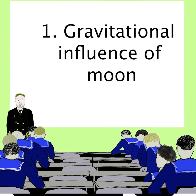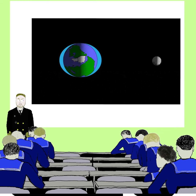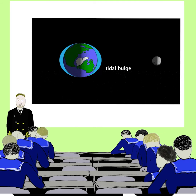1. Gravitational influence of the Moon. The Moon's gravitational pull on Earth's waters is a primary force behind the formation of marine currents. This pull creates tidal bulges — areas where the sea level rises due to the Moon's gravity. Interestingly, there's a second bulge on the Earth's opposite side, formed by centrifugal forces.